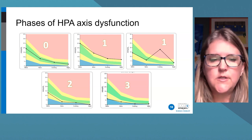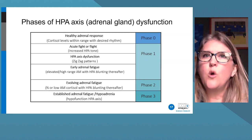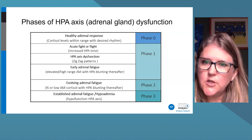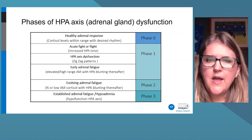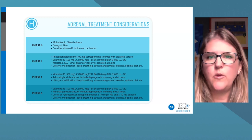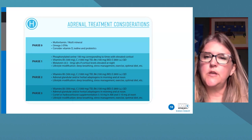Phase zero is a healthy response. Phase one encompasses patterns where the AM value is high or elevations appear at times of day when they shouldn't. Phase two shows evolving suboptimal or low AM cortisol, blunting thereafter. Phase three — sometimes called a flat liner — is significant overall hyposecretion. Vitamins and adaptogenic herbs can be helpful across phases, while lifestyle modifications are typically harder to adapt but equally important.